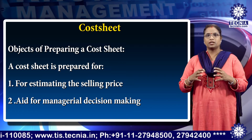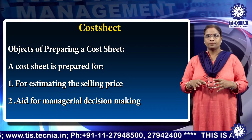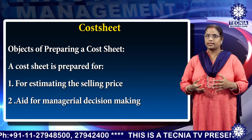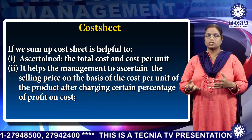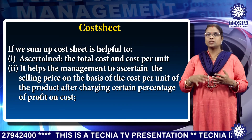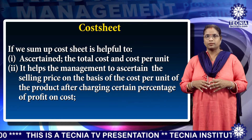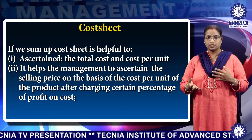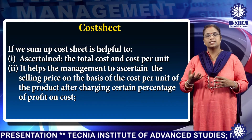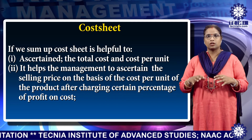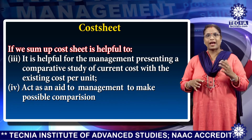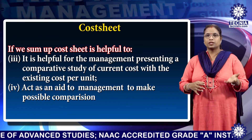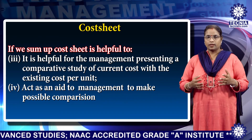Third, as a guide for preparation of budgets — organizations can prepare a budget with the help of a cost sheet using current or previous years' data. In summary, a cost sheet is helpful to ascertain the total cost and cost per unit. It helps management ascertain the selling price on the basis of cost per unit after charging a certain percentage of profit on cost. It is also helpful for presenting a comparative study of current cost with existing cost per unit.